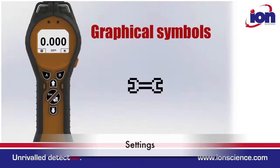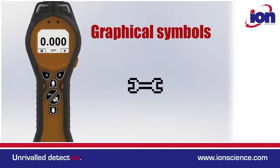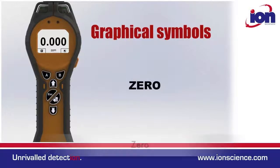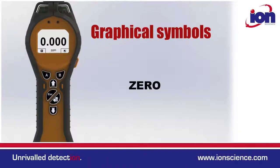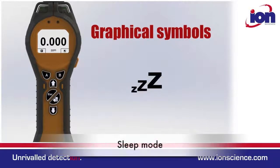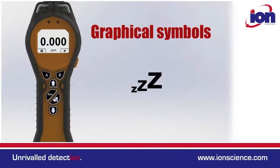Settings: this is where you adjust everything from backlight settings to a custom calibration. Zero: this allows you to zero out a known harmless background or use a fixed zero calibration point. Sleep mode: this puts the Tiger on standby, which conserves energy and avoids the full startup sequence.